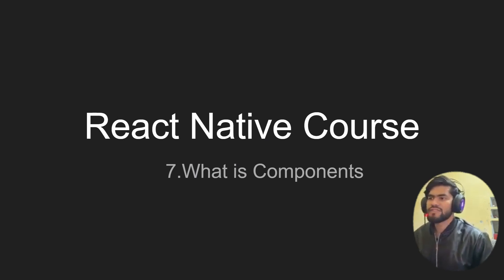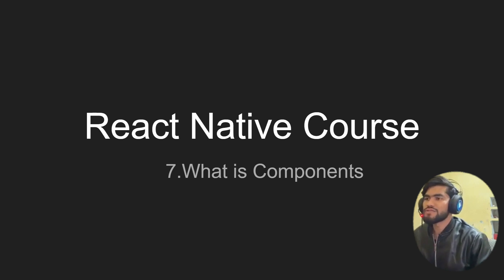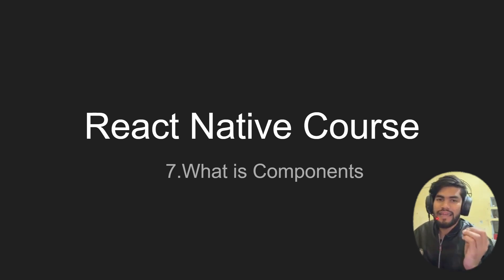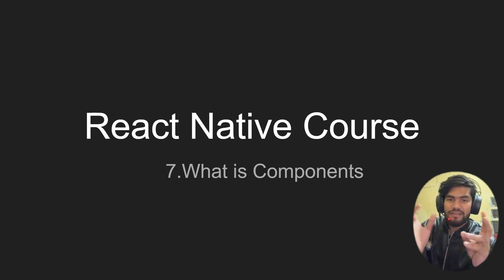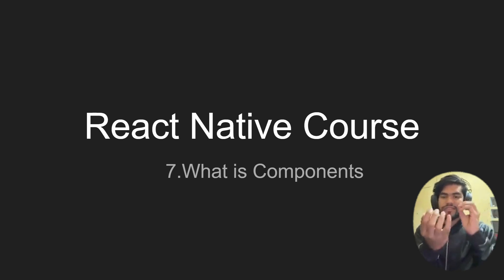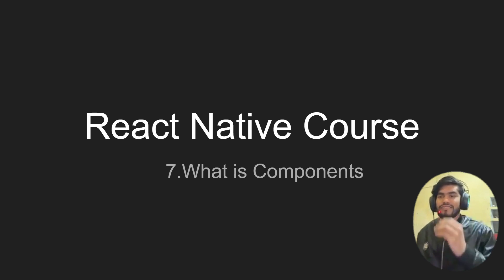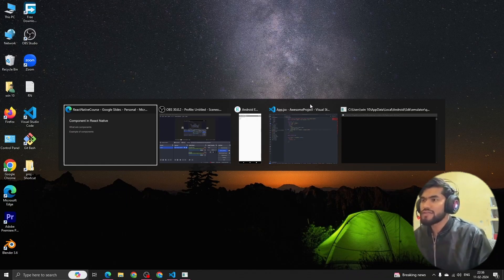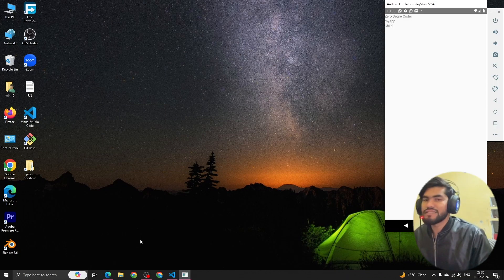Hey guys, welcome back to the React Native course, chapter 7. In this section we are going to talk about what is a component. In daily life, everything is a component. Let's suppose you have a bicycle — a bicycle is made of some components. And that's how, if we talk about daily life, everything in the app is also a component.